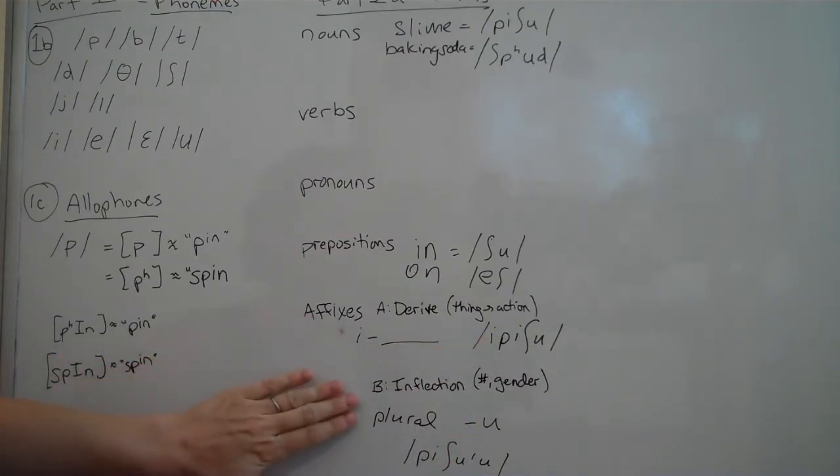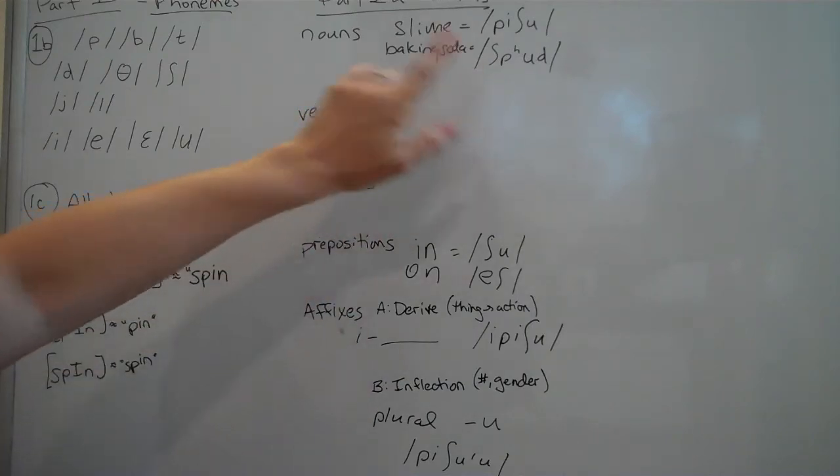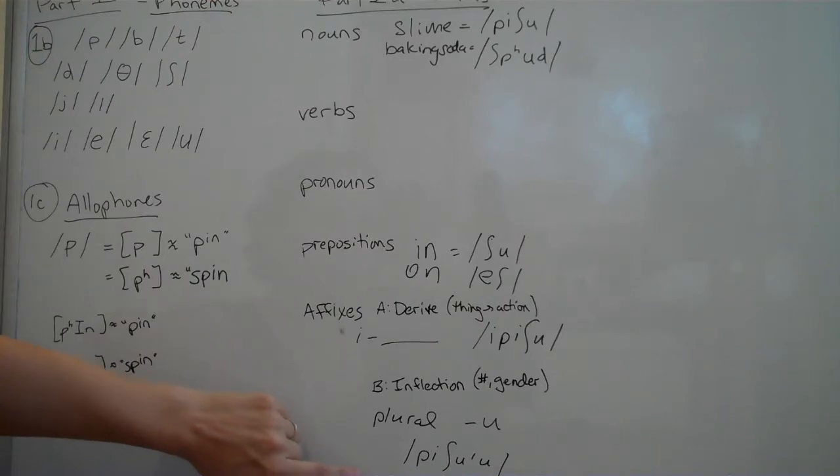For the second kind of inflection, or affix, I'm going to inflect and make a word plural. So I'm going to make baking soda plural, or I've made both of them plural, by adding an oo sound at the end. So pishu'oo means slimes. There are many different kinds of slimes in the world, or many, we in English would say slime, but I've made it plural pishu'oo. And to make baking soda plural, spudu would be baking sodas.